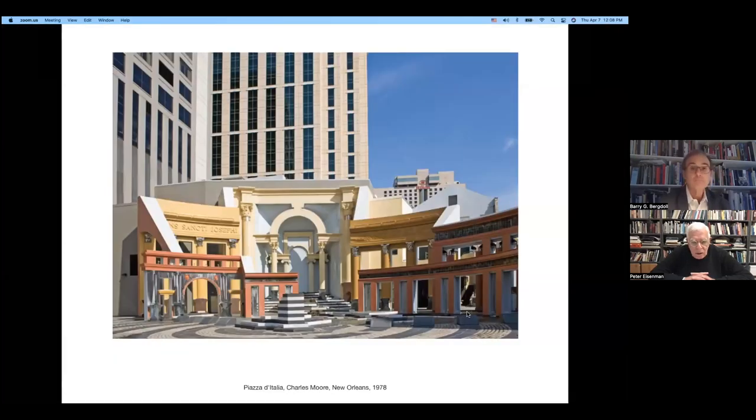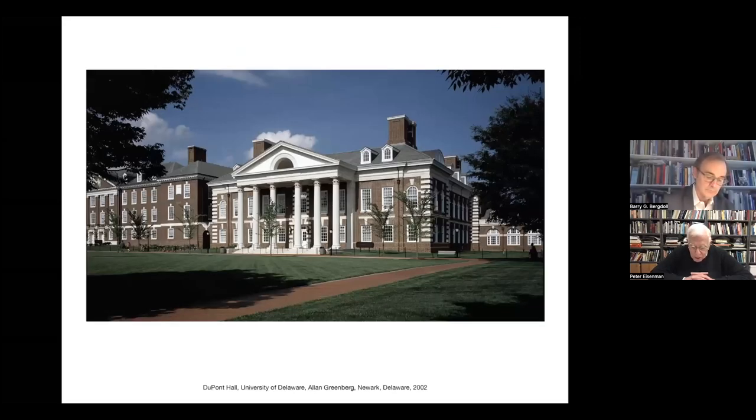There are two important trends in what is known as architectural postmodernism — a period of thought spanning from 1966, when Bob Venturi published Complexity and Contradiction, to 1988, when the Deconstructivist show at MoMA finished off high postmodernism. One of these trends was figurative and playful with historical allusions, typified by someone like Charles Moore — iconic of that time was the Piazza d'Italia in 1978. The second was a more somber view of history, a postmodern classicism, as practiced by the Krier brothers, Quinlan Terry, and Alan Greenberg.